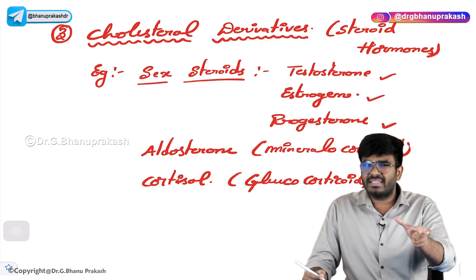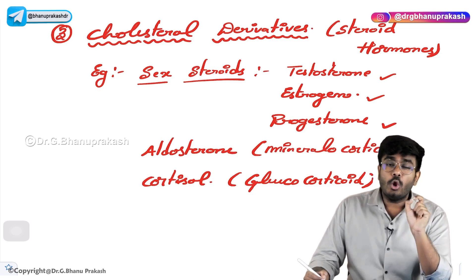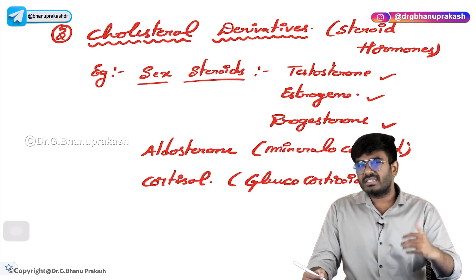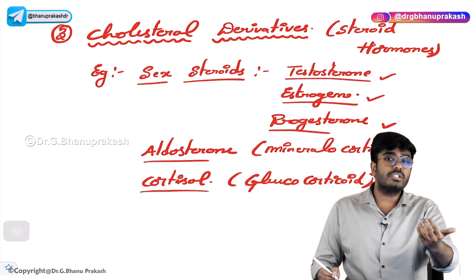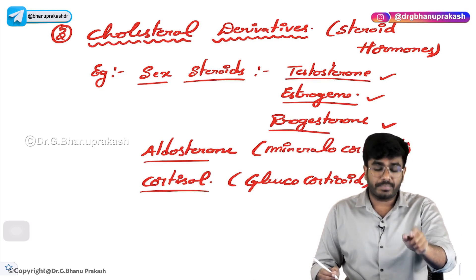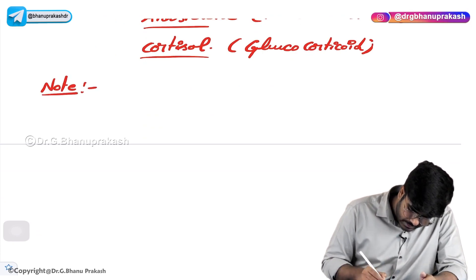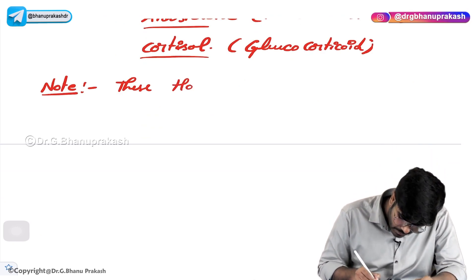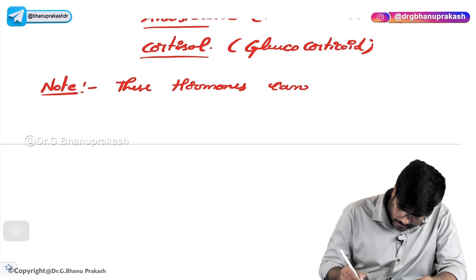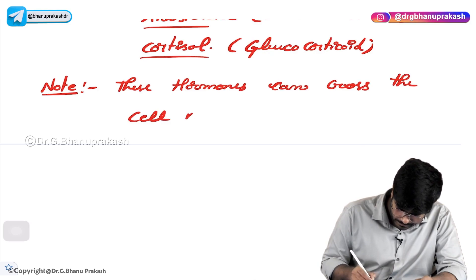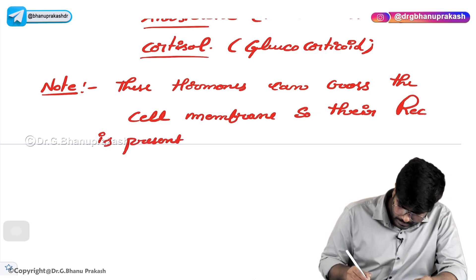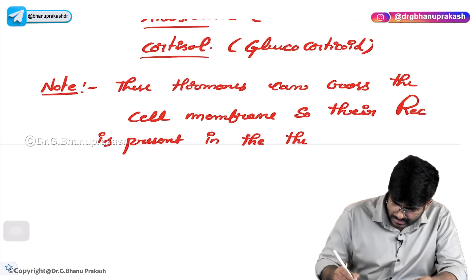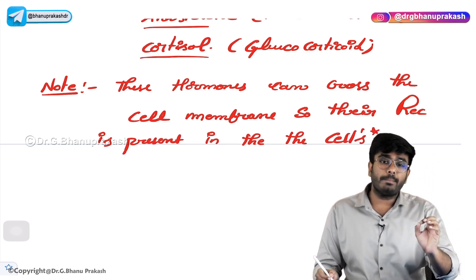Now, cholesterol is a fat-like substance. So think about the location of the receptors for these hormones. All these hormones — testosterone, estrogen, progesterone, aldosterone, cortisol — are all derived from cholesterol. So can they cross the lipid bilayer, the cell membrane? Absolutely yes. Take note: these cholesterol derivative hormones can cross the cell membrane, and therefore their receptors are present inside the cell — intracellularly. This is a very important point to know.